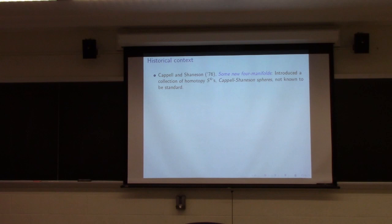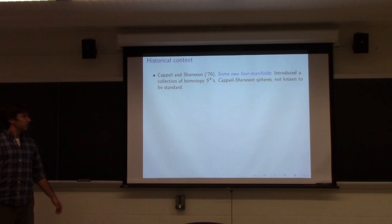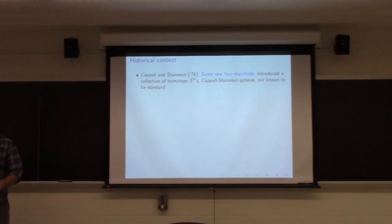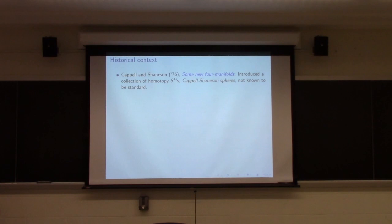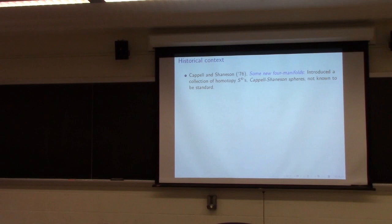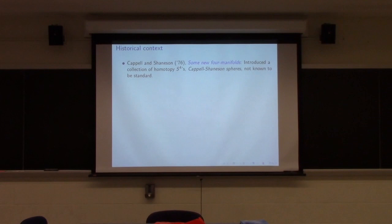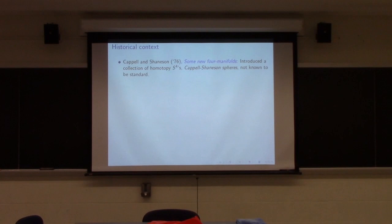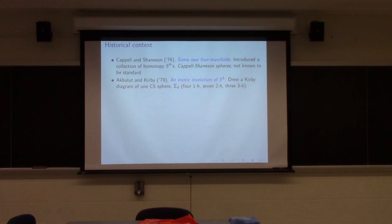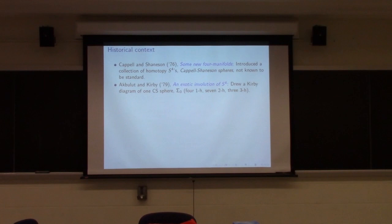A bit of historical context. Someone comes up with examples of homotopy four-spheres and then eventually someone proves they are standard. The manifolds I'll talk about began in 1976 with the Cappell-Shaneson spheres, constructed by taking a three-torus bundle with a monodromy map and doing some surgery — a fairly simple construction dictated by a matrix that produces a rich source of potential counterexamples.